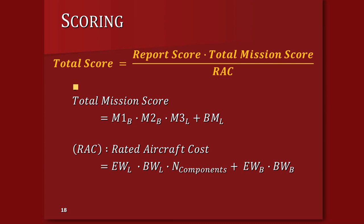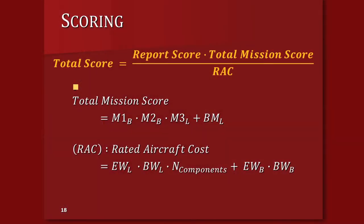The score that year was broken down into report score, total mission score, and RAC — rated aircraft cost. What was interesting about our mission score was that everything was binary: if we completed the mission, we got a certain number of points; if we didn't, we received a 0.1 or 0.2 multiplier. So we assumed we'd get a perfect total mission score because we planned to finish all three missions. For report score, we always assume 100. Our rated aircraft cost was the main driver — it was based on empty weight, battery weight, and number of components for both planes.